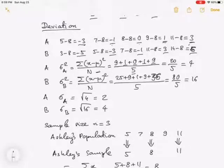For Brandon, the population variance is negative 5 squared is 25, negative 3 squared is 9, negative 1 squared is 1, 3 squared is 9, and 6 squared is 36. So totally 80, and divided by 5 we get 16. The population standard deviation is the square root of the population variance. Therefore for Ashley, sigma is square root of 4, that means 2, and for Brandon, sigma is square root of 16, that means 4.